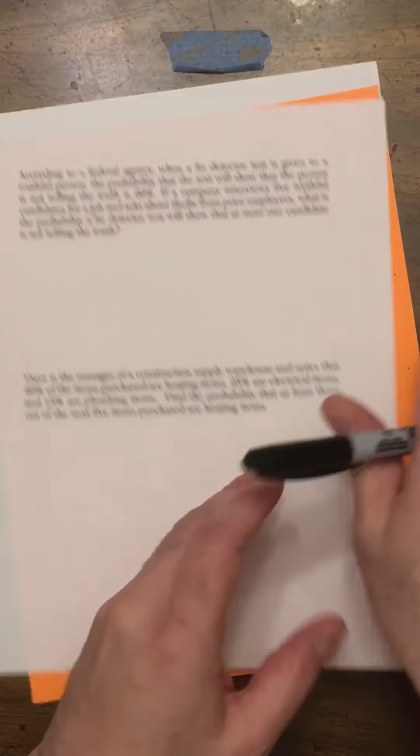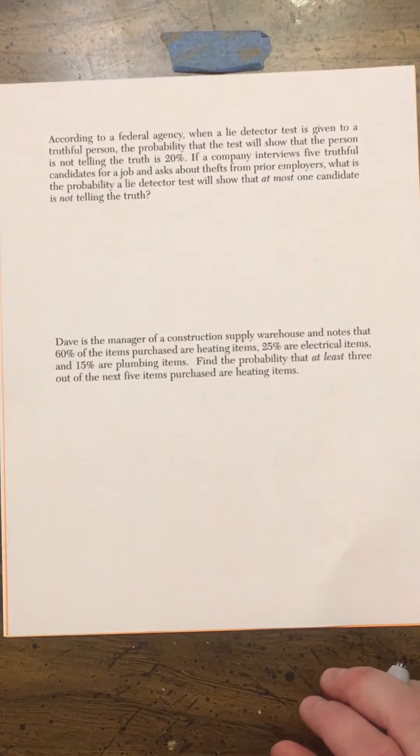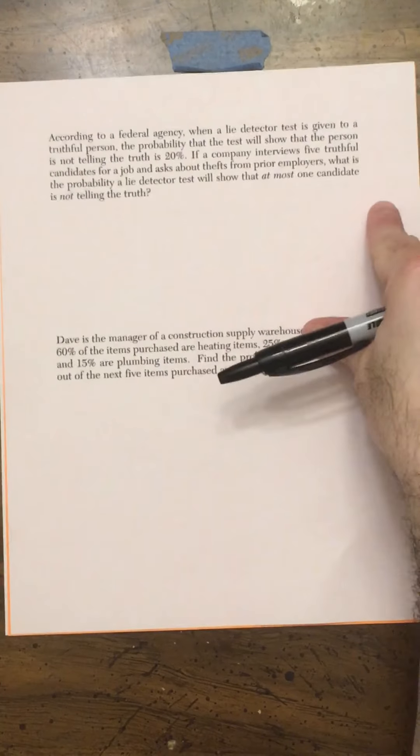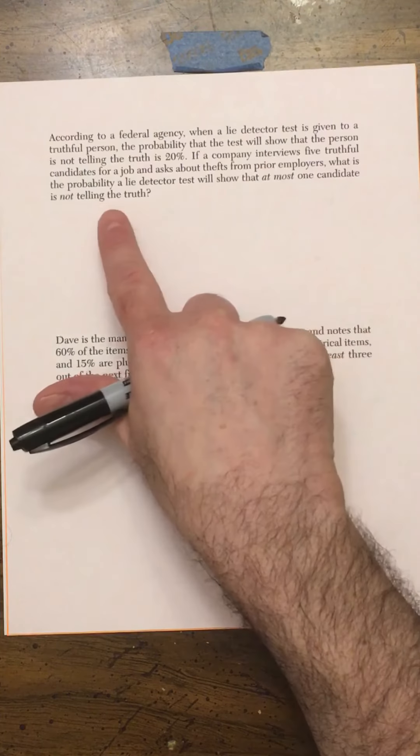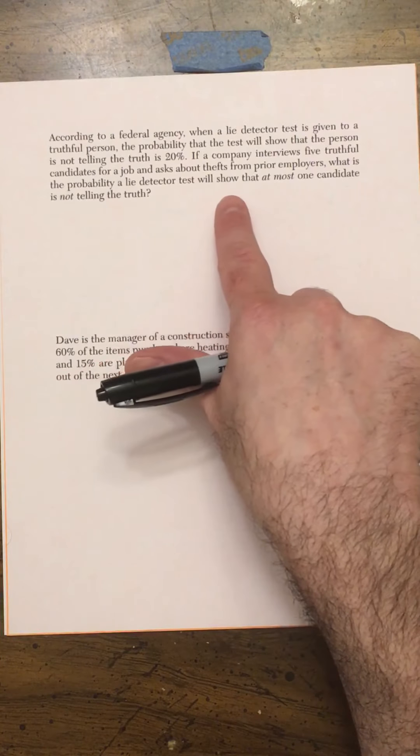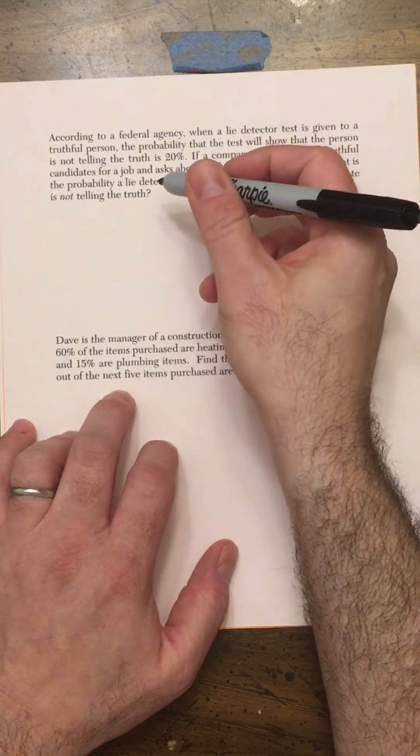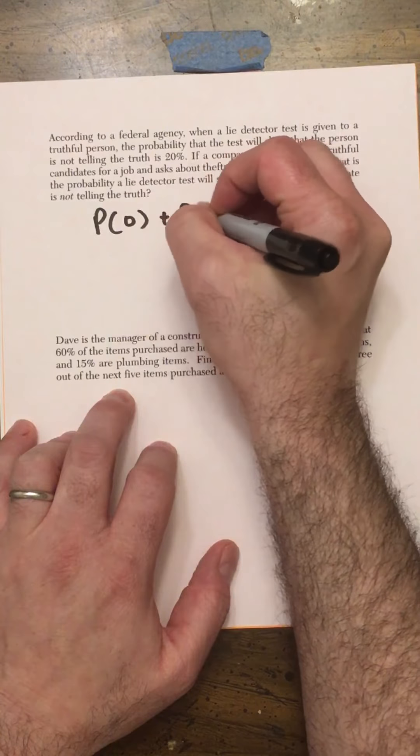Let's try another problem like that. According to a federal agency, when a lie detector test is given to a truthful person, the probability that the test will show that the person is not telling the truth is 0.2. If a company interviews five truthful candidates, so we know all these people are truthful, but remember the test is not always accurate. If we interview five truthful candidates for the job and ask about thefts from prior employers, what's the probability a lie detector test will show that at most one candidate is not telling the truth? At most one means 0 or 1.